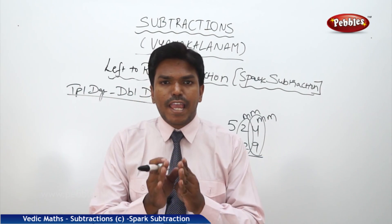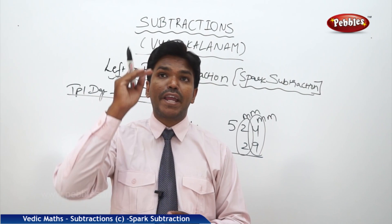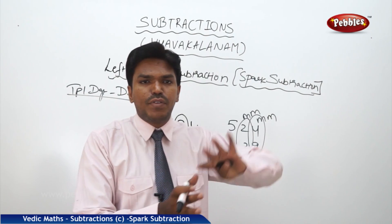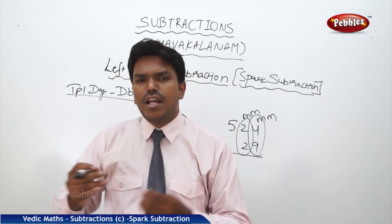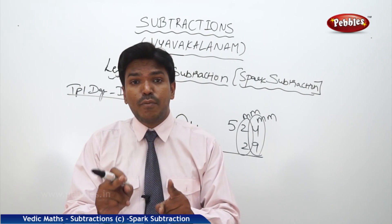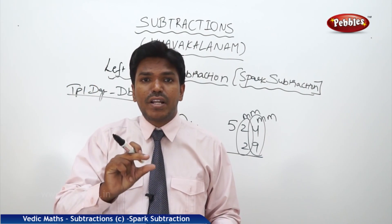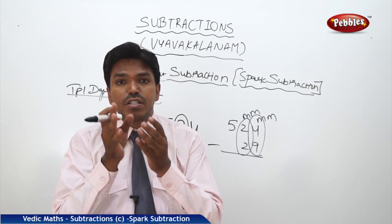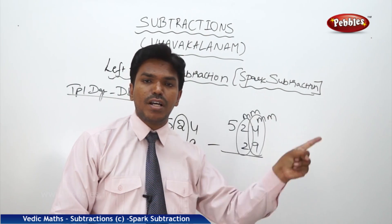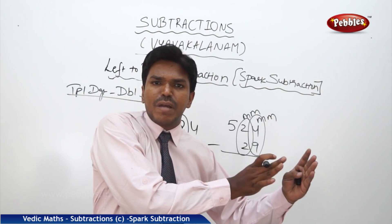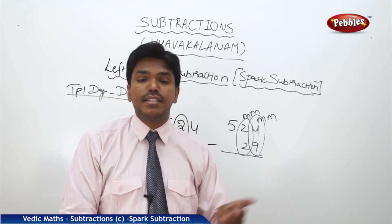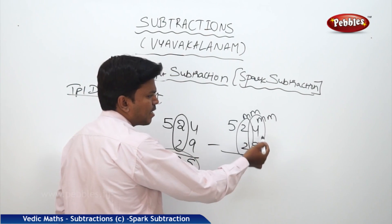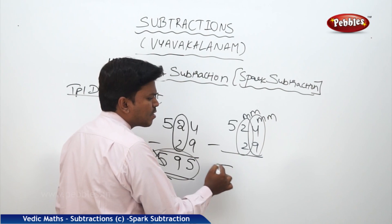If the numbers are same — both the above and below number, both minuend and subtrahend digits are same — and they are coming in the middle, we cannot decide. But if they are coming at the start or at the end, we don't have any problem. The problem only occurs when the same digits come in the middle. That is the exception case. So we look at the next numbers: if those are mismatched, these numbers are also mismatched; if matched, these are also matched. We decided 4 and 9 are mismatched, so 2 and 2 are also mismatched — and 5 becomes 4.